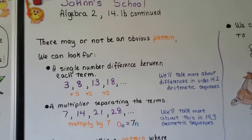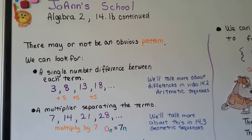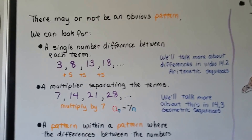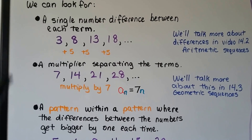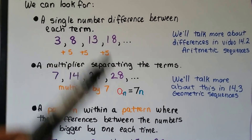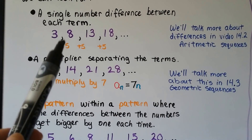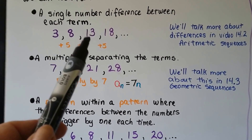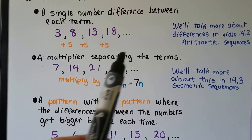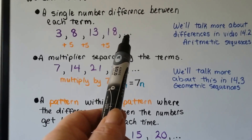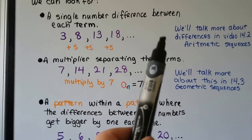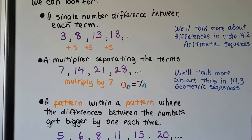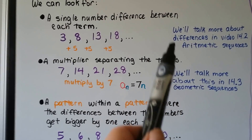There may or may not be an obvious pattern, so we can look for a single number difference between each term. Here we have three, eight, thirteen, eighteen — each term is going up by five more. So we can figure what the next one is going to be: it's going to be 23. We're going to talk more about differences in video 14.2 in that lesson.